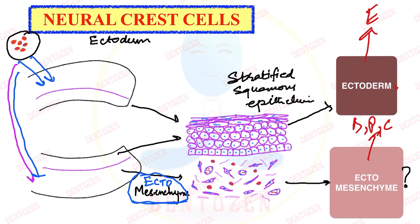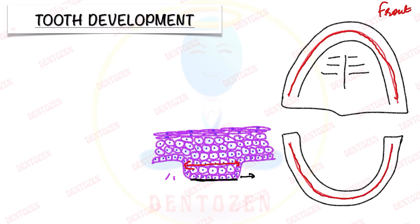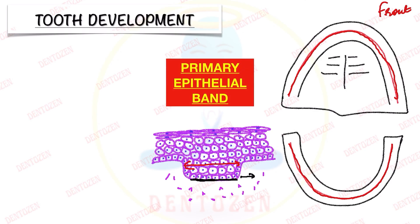Let's see how ectoderm and ectomesenchyme further proceed with tooth development. The ectoderm cells in the basal region will rapidly proliferate and form a band. If we look at the front view of the mouth, this epithelial band forms only in certain regions, in the form of a horseshoe-shaped arch. This band grows into the mesenchymal cells and is known as the primary epithelial band.